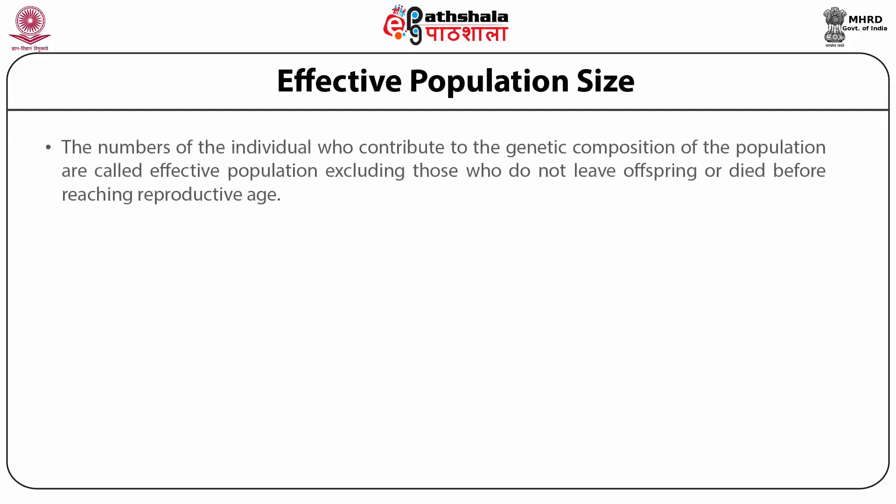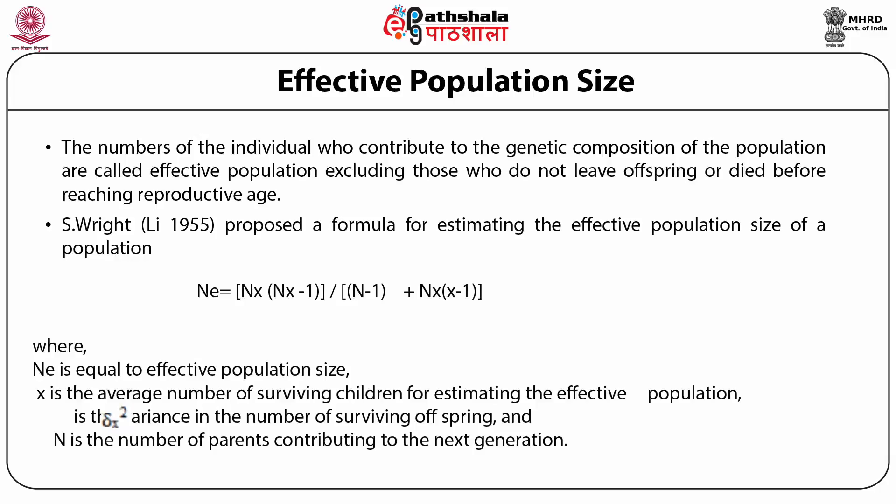Effective Population Size. The individuals who contribute to the genetic composition of the population are called the effective population, excluding those who leave no offspring or died before reaching reproductive age. The size of the effective population is called the effective population size. The number of effective population may be less than the total number of the population. The effective population size is a mathematical expression of an ideal population for comparison in the context of evolutionary mechanisms. S. Wright proposed a formula for estimating the effective population size of a population.